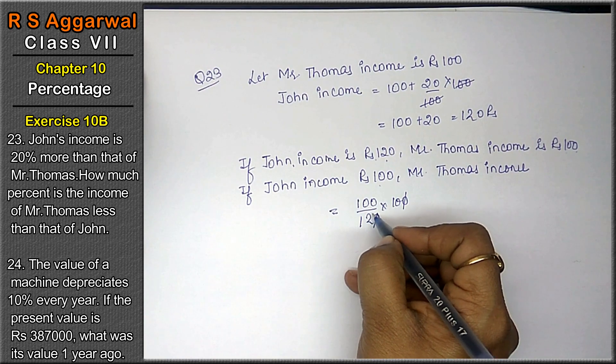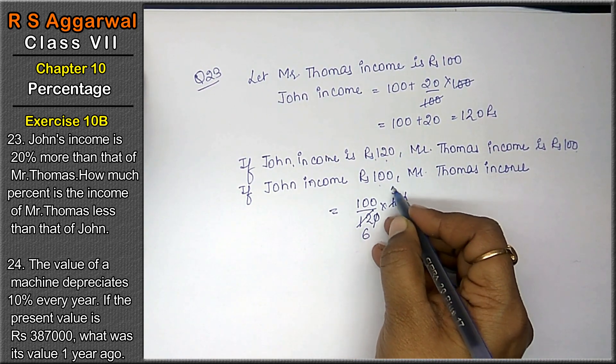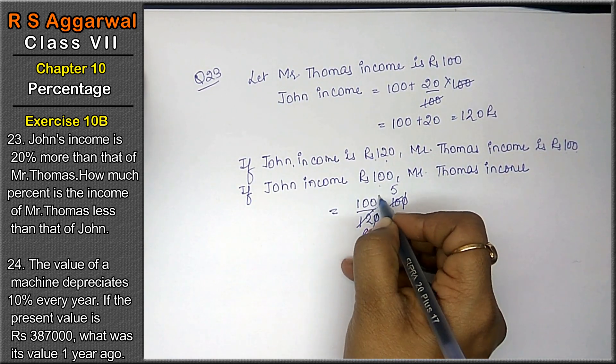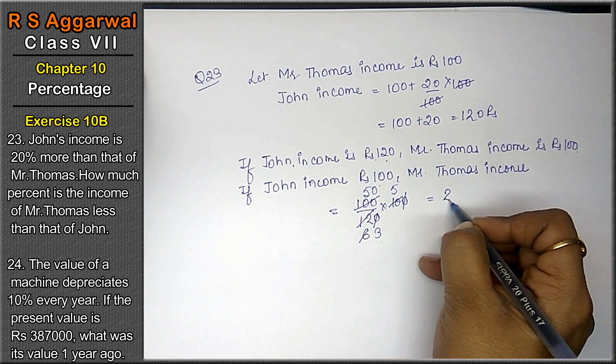Zero cancelled, 2, 6 times 12, 2, 5 times 10, 2, 3 times 6, 50. 250 upon 3.